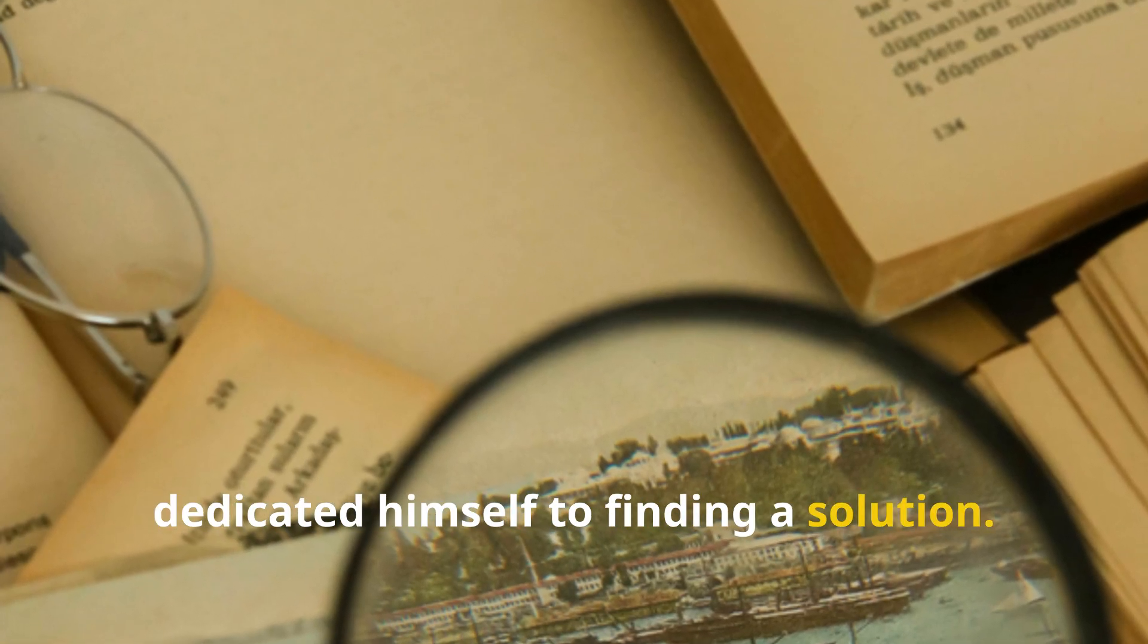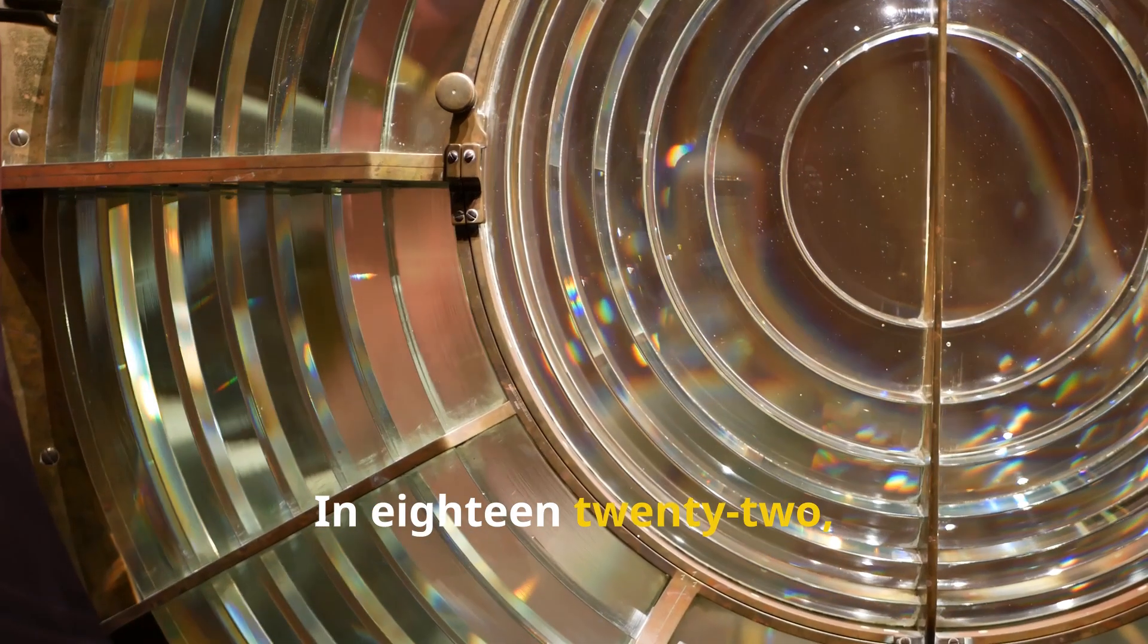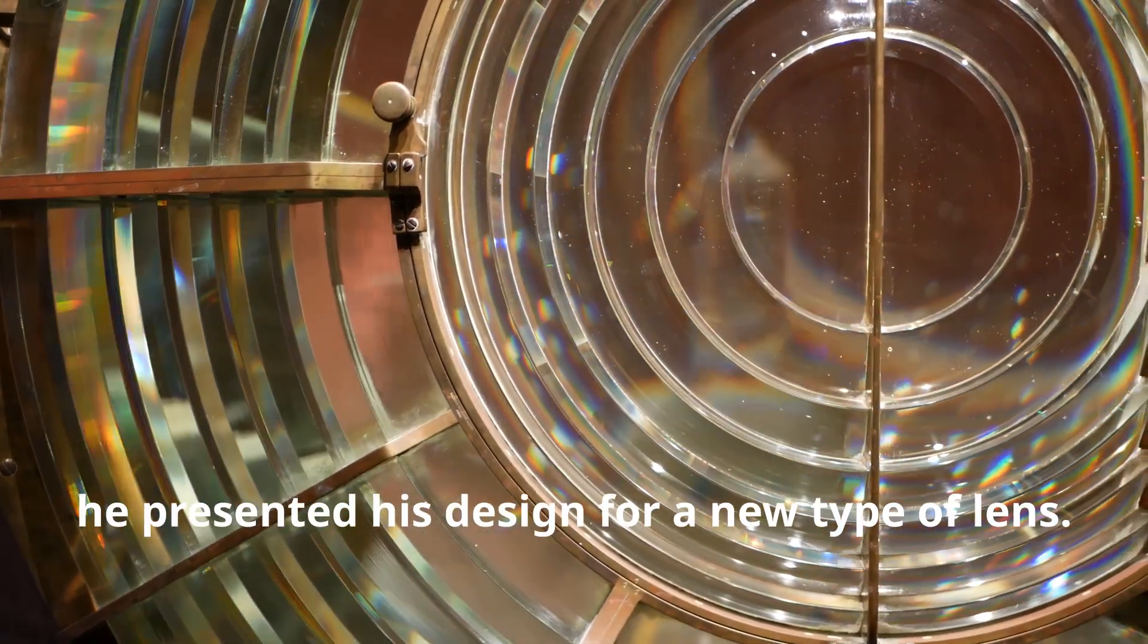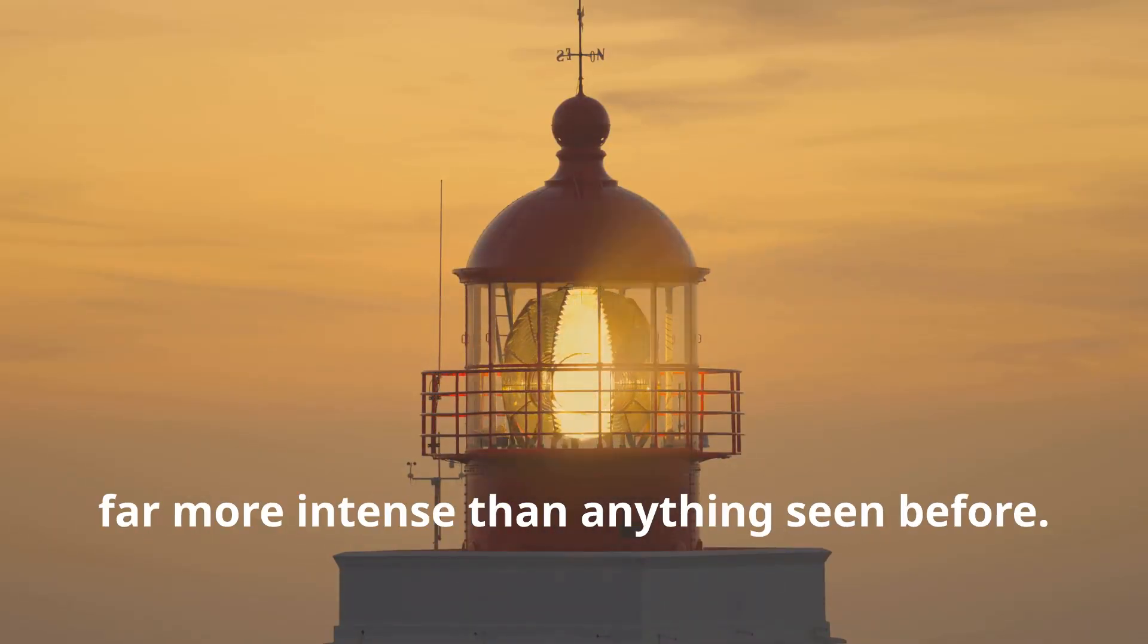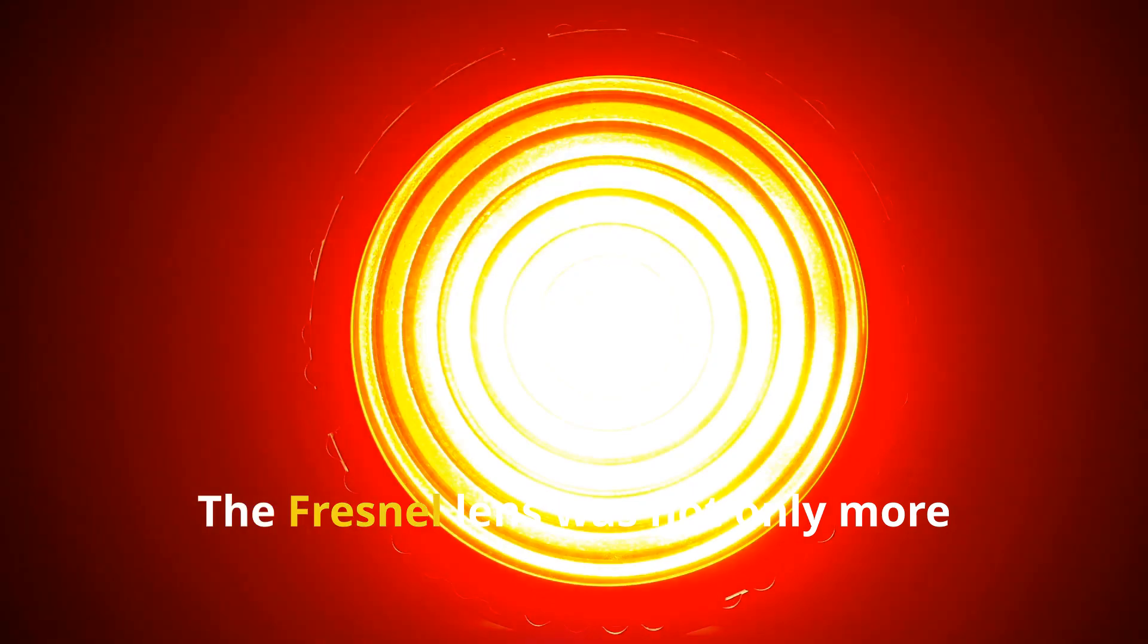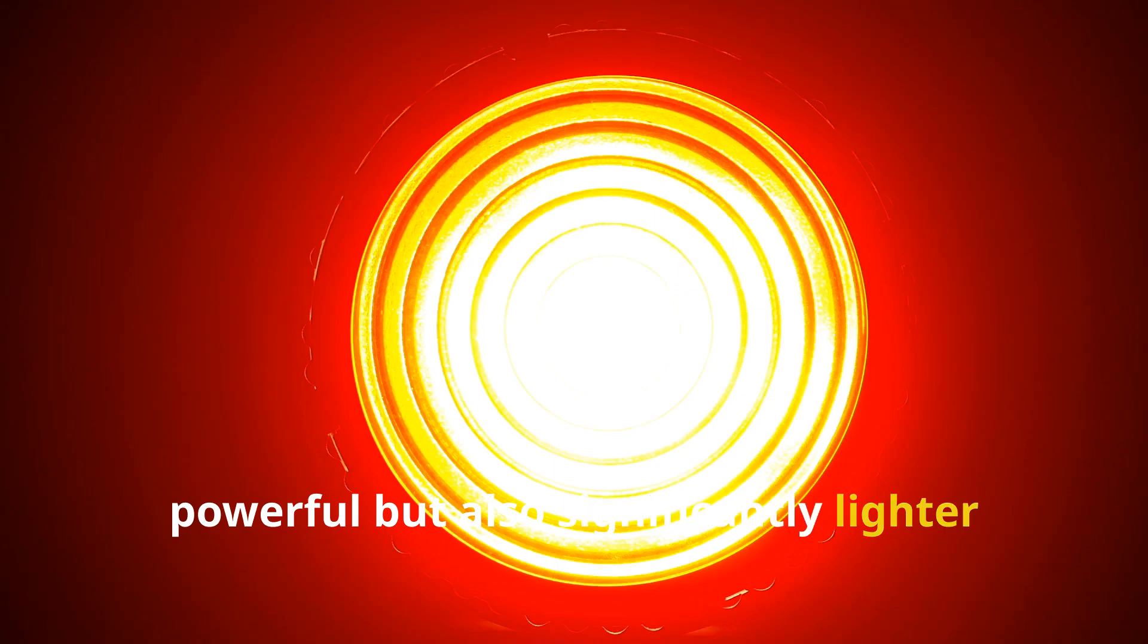In 1822, he presented his design for a new type of lens. His innovative lens could produce a beam far more intense than anything seen before. The Fresnel lens was not only more powerful, but also significantly lighter and thinner.